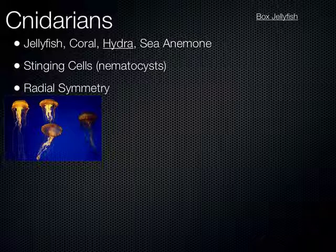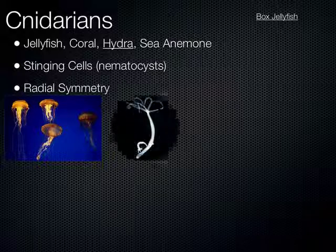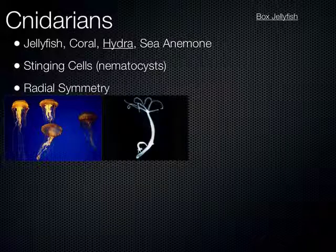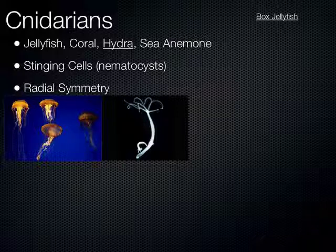They have radial symmetry — if you think about these organisms, they arrange in a circular pattern. This is a hydra, mainly in the polyp stage. It's stuck at the base, and at the top are tentacles with stinging cells. This is very small — we'll be looking at it under a microscope.